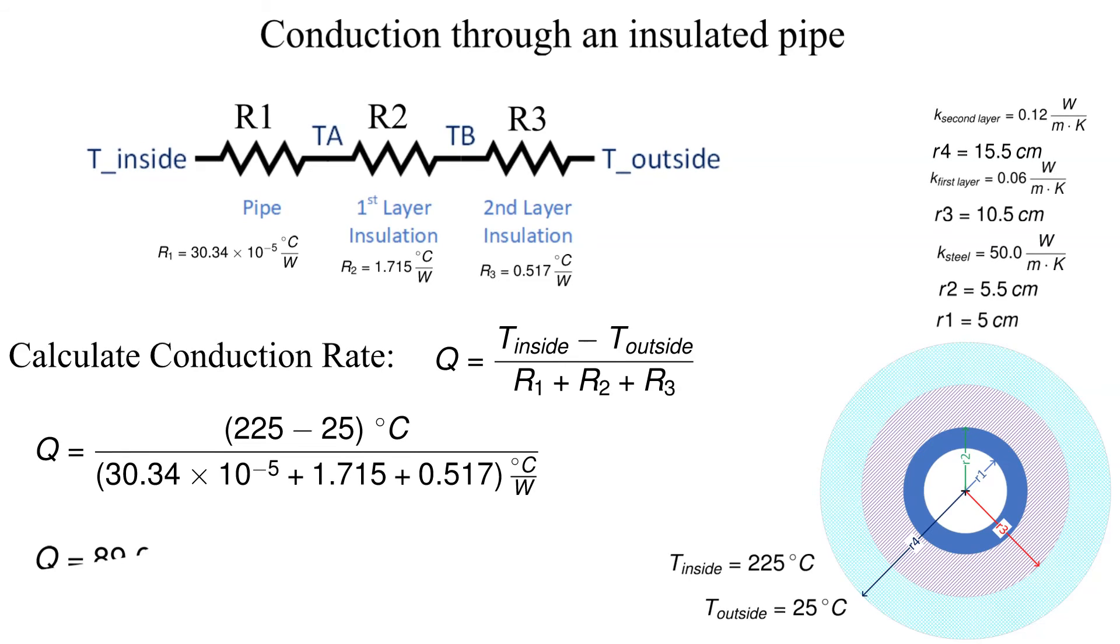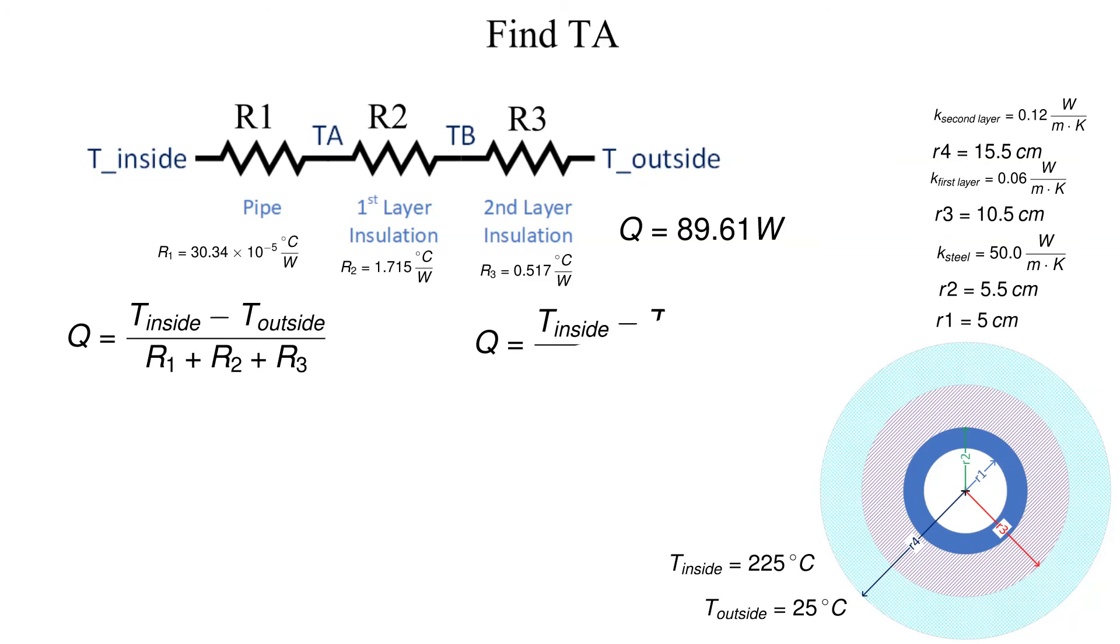Now let's find the intermediate temperature between the steel pipe and the first layer of insulation, TA. We define the thermal circuit from the inside of the pipe wall to the outside of the pipe wall. Since we now know the heat transfer rate, the only unknown is TA. TA is equal to 224.97 degrees Celsius.